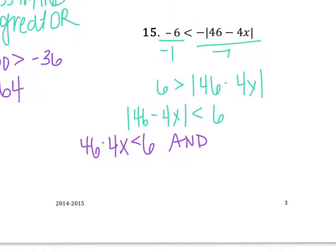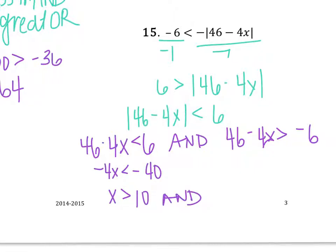Solve this equation. Take away 46. I get negative 4x is less than negative 40. Divide by negative 4, so I flip the sign again. x is greater than 10. And same thing: negative 4x is greater than negative 52. Divide by negative 4, so I flip the sign. x is less than 13.